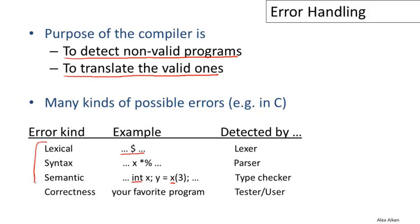There may also be many errors in your program that are not errors of the programming language. The program you wrote is actually a valid program, but it doesn't do what you intended — you actually have a bug. While the compiler can detect many kinds of errors, it doesn't detect all of them. Once we get past what the compiler can do, it's up to testers and users to find the rest of the problems.